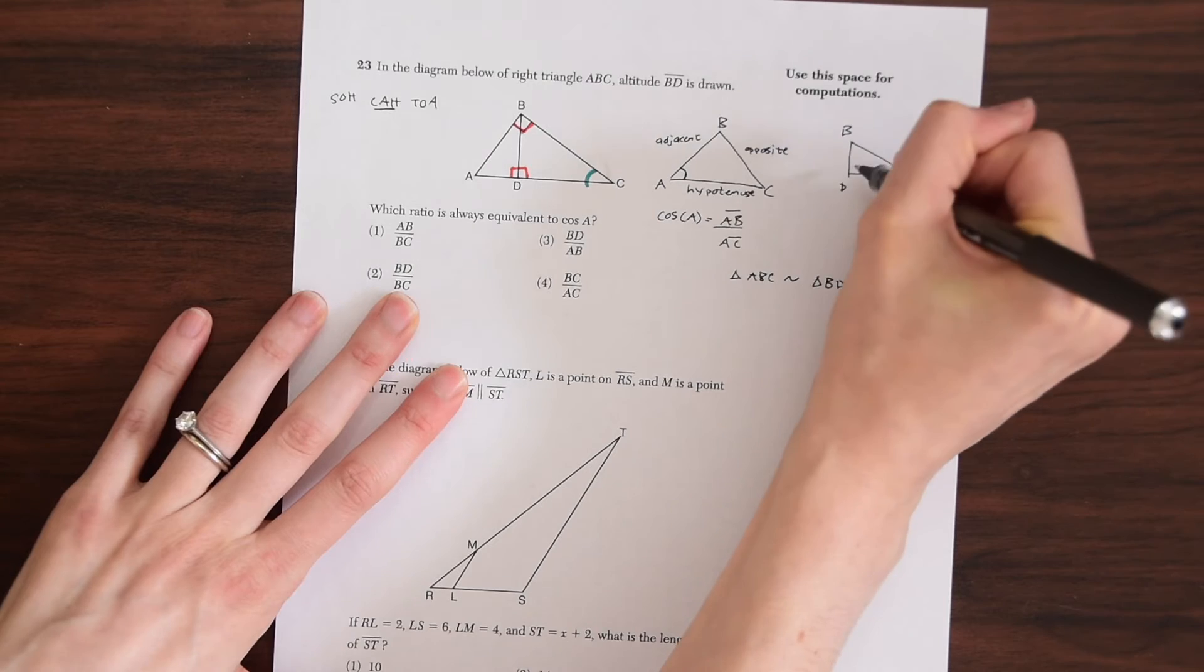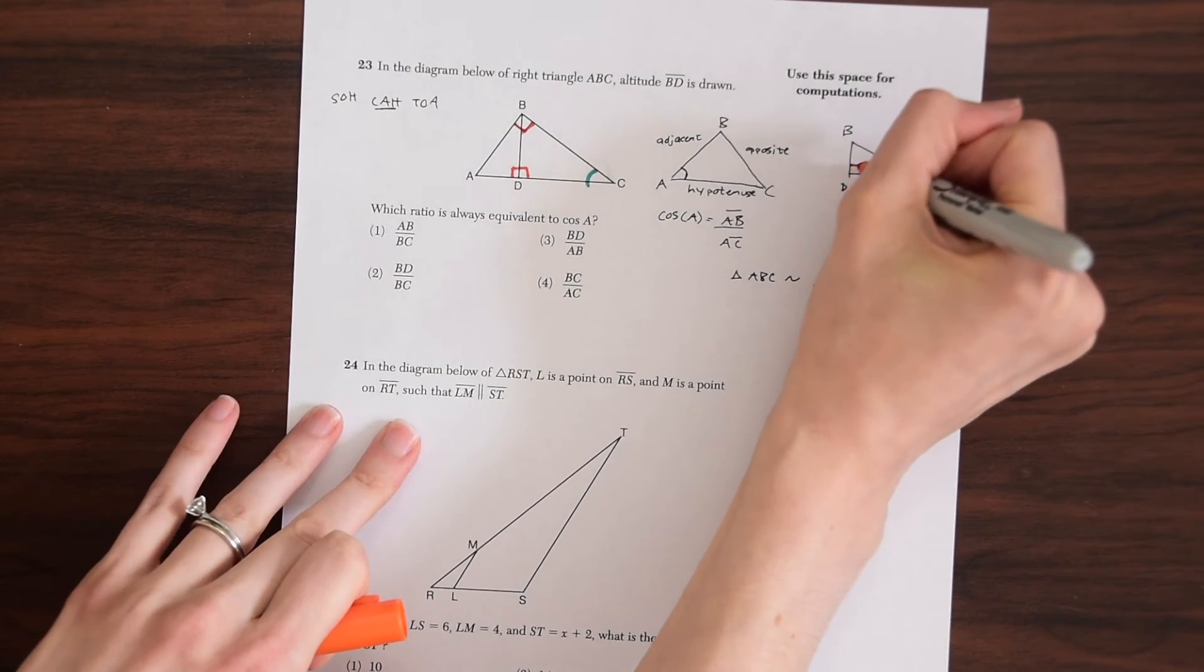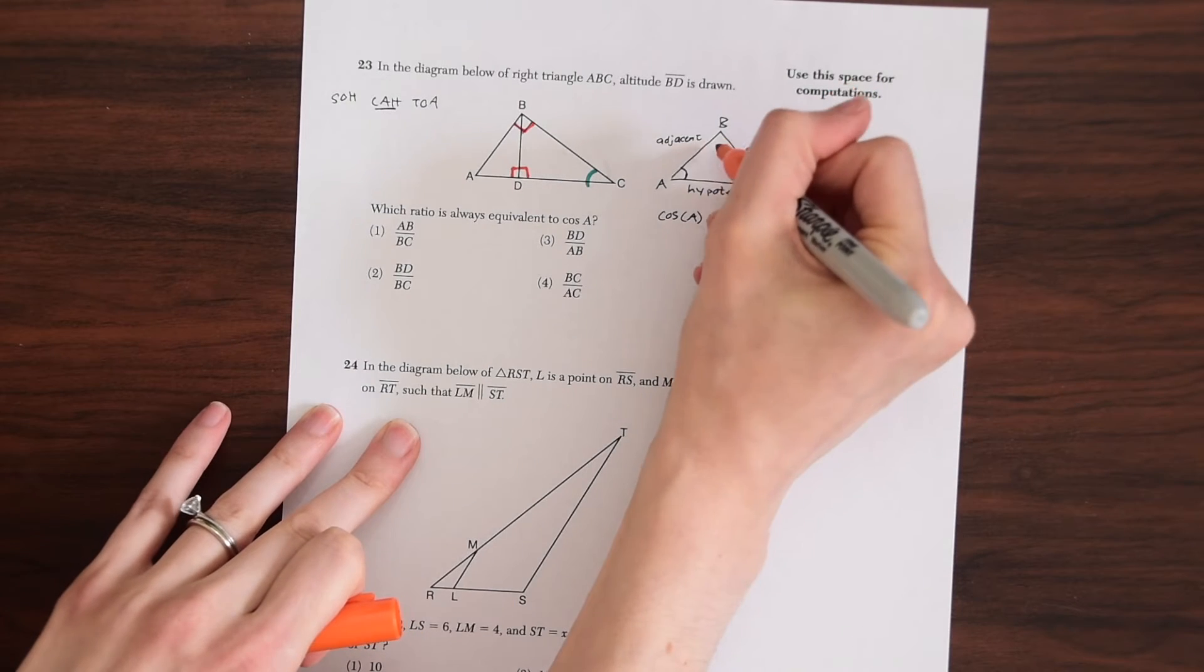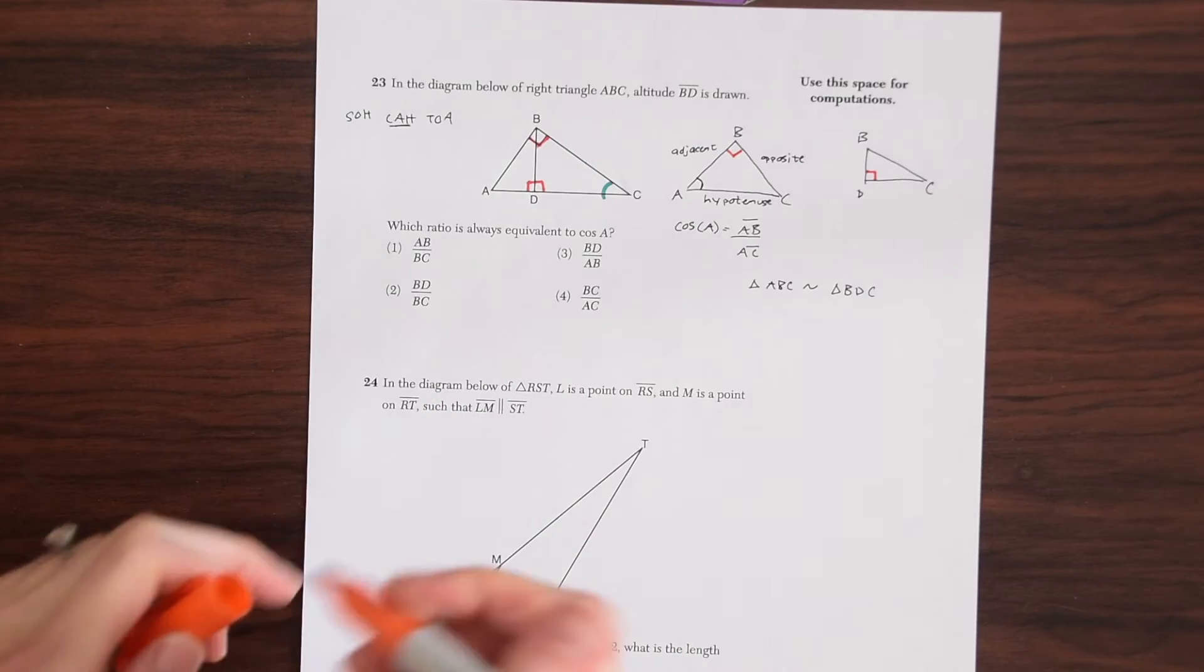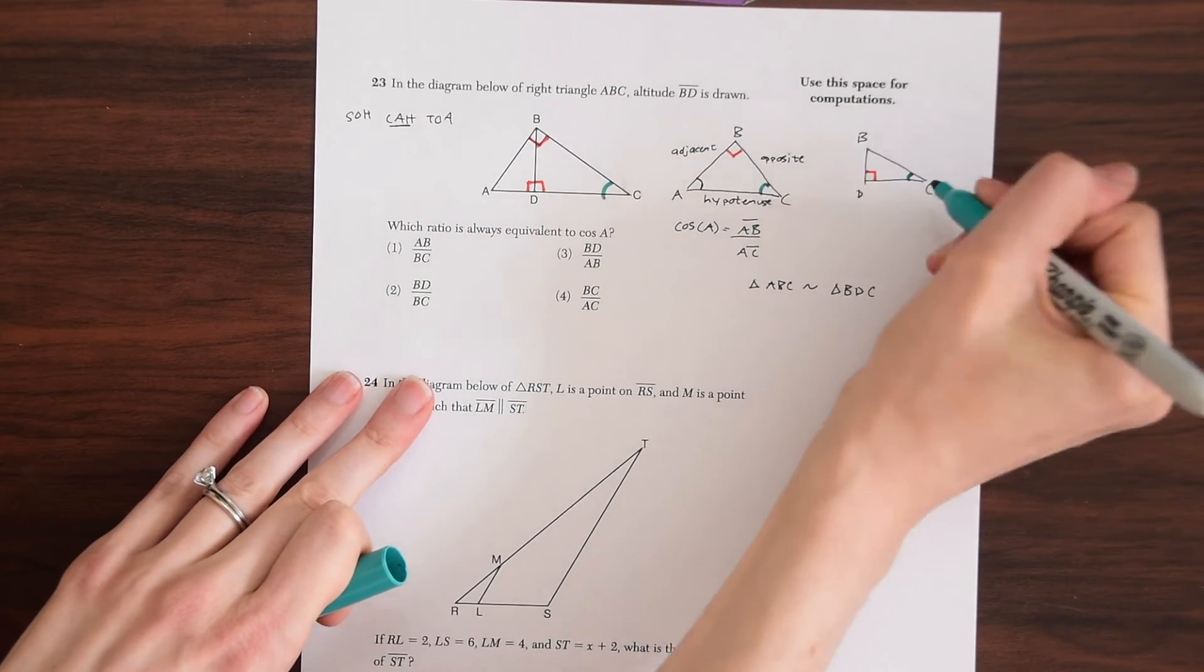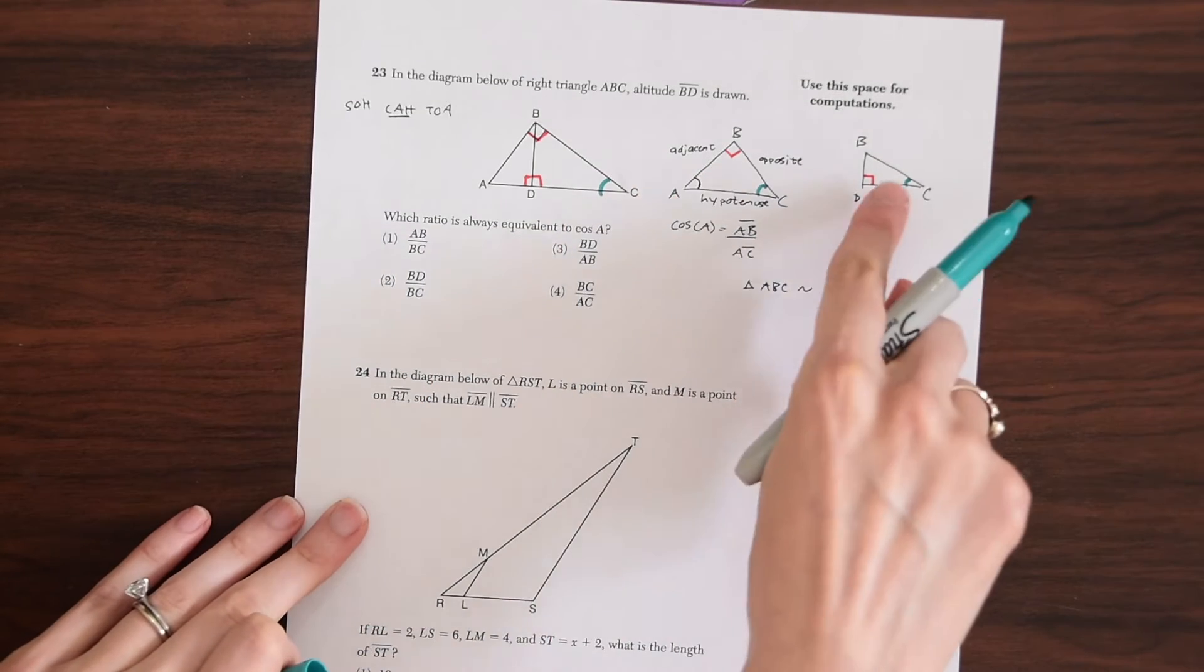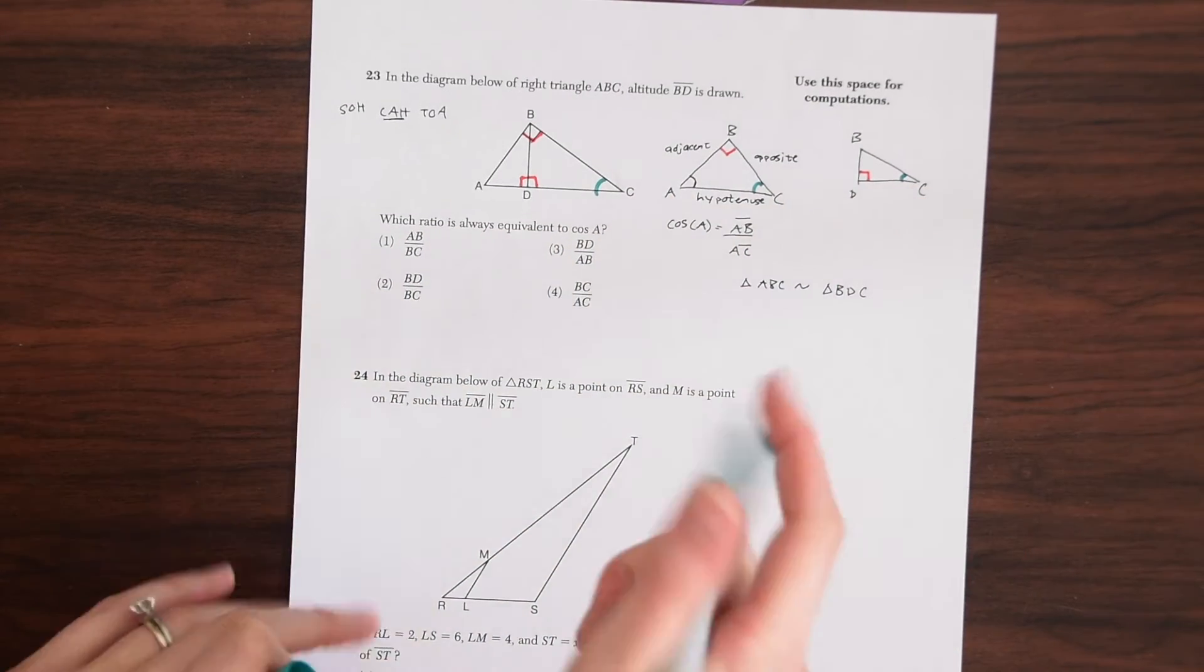That is an angle B up here. So we have, those are congruent. And then they both share an angle C, right, because that's just within both triangles. So we know that triangle ABC is similar to triangle BDC.